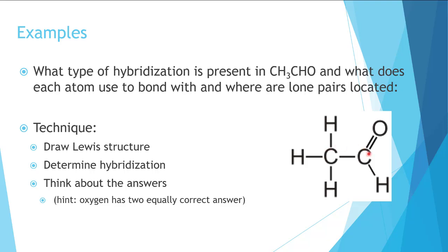For the right carbon, it's only bonded to three other atoms, so we need to start with three unhybridized orbitals to get three hybrid orbitals. Therefore, for the C on the right, it is sp2 hybridized.